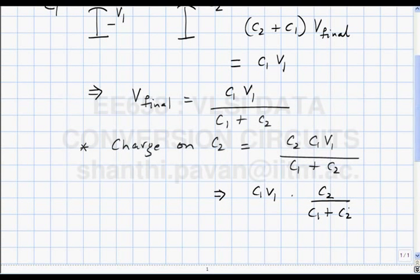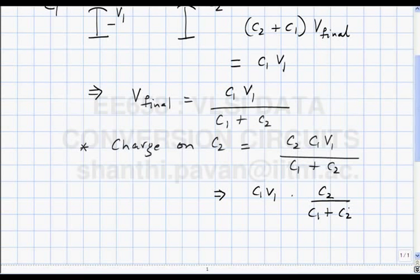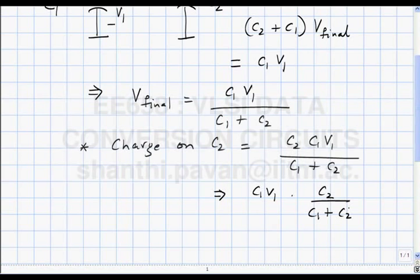What is this equation telling you? The initial charge on C1 was C1·V1. In an attempt to transfer this charge into another capacitor, we connected C2 across C1, and we see that only some of the charge is indeed transferred onto C2 — only a fraction C2/(C1+C2).